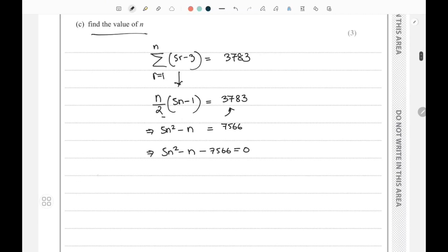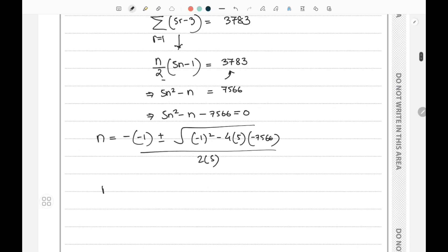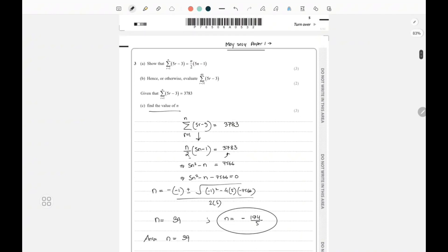Using the quadratic formula, n equals negative b plus or minus square root of (b squared minus 4ac) divided by 2a. The value of n comes as 39 and the value also comes as minus 194 by 5. But the answer should be n equals 39 because terms cannot be negative. That's the end of question number 3, thank you so much.